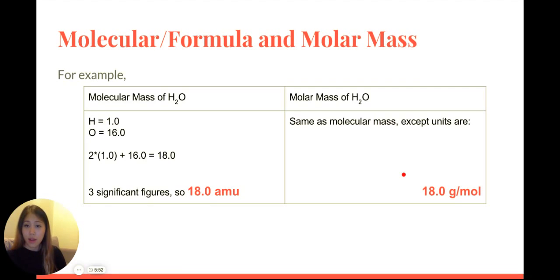We see water has the molecular formula of H2O. H2O means two atoms of hydrogen and one atom of oxygen. You have hydrogen equaling 1.0 on your periodic table, and your oxygen is 16.0.